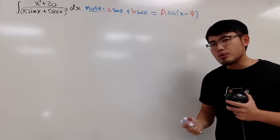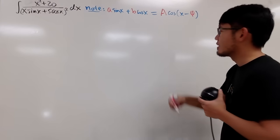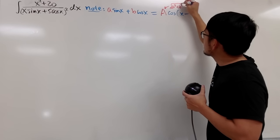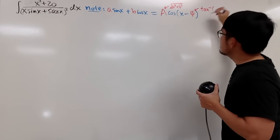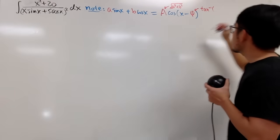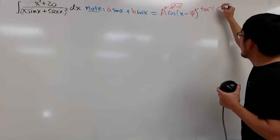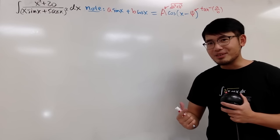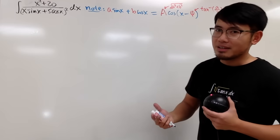If you want to see the proof, check out the video linked in the description. The capital A is the square root of a² plus b². For the angle phi, since a is in front of the sine, we use inverse tangent of a over b. The denominator will actually simplify much better as we proceed.